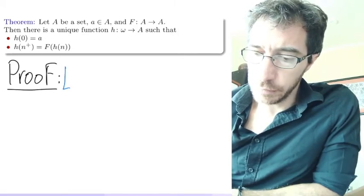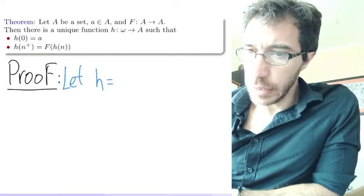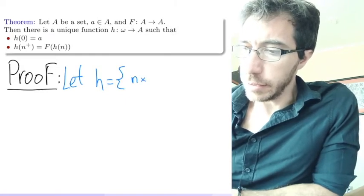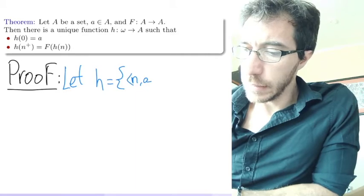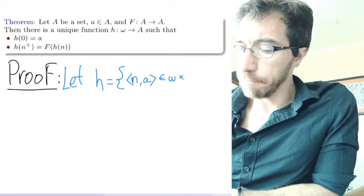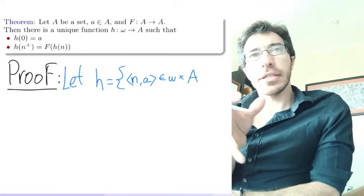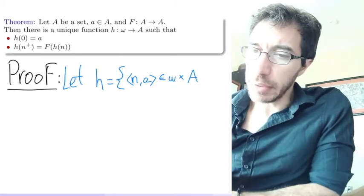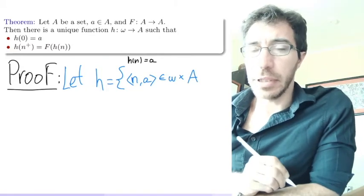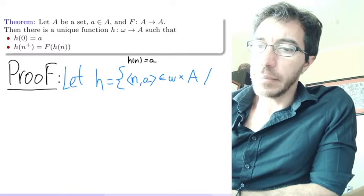And the definition is going to be this one right here. So we're going to define h as the set of pairs n, a, that belong to omega times A. Remember, we are defining the graph. I mean, a function is given by its graph. So the fact that the pair n comma a belongs to h, the same thing as saying that h of n equals a. That's what we mean by that. And when is h of n going to be a?